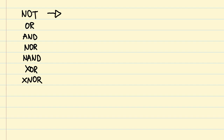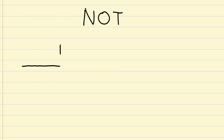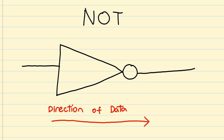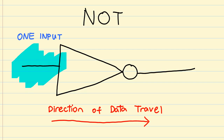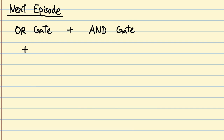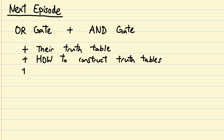I'll show you the symbol for each gate as we get to it. For the not gate, the symbol looks like this. In this figure, data is supposed to travel from left to right. Since the not gate takes only one input, there is only one line connected to the input side of the gate in the diagram. That's pretty much it for not gates. In the next episode, we'll look at slightly more complicated gates and their truth tables. You are watching the Logic Gates web series on 0612 TV.